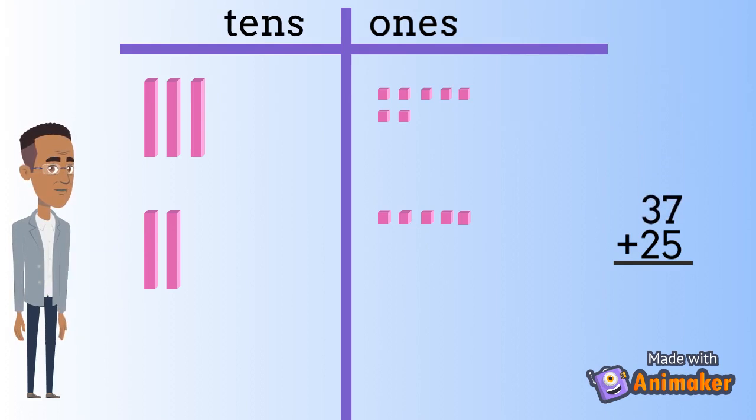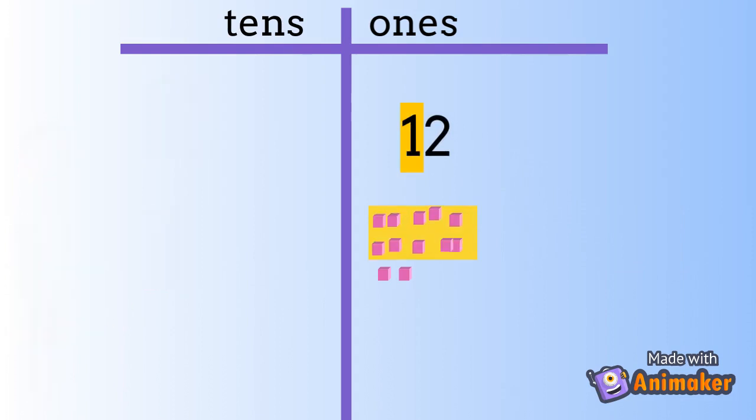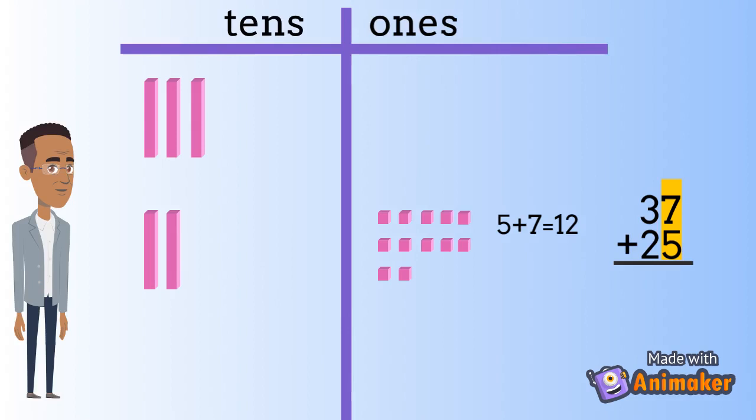We always add the numbers in the ones column first. 5 plus 7 is 12. But wait a minute, 12 can't fit in the ones column, because 12 has a 10 inside. Whenever we have 10 or more ones in the ones column, we can make a 10 and carry it over to where it belongs in the tens column.